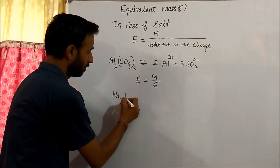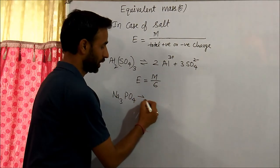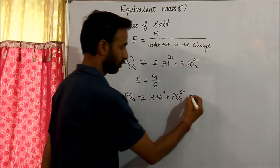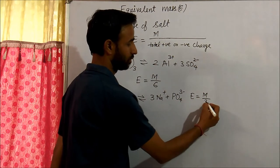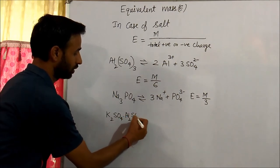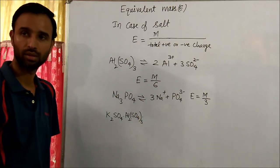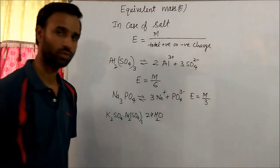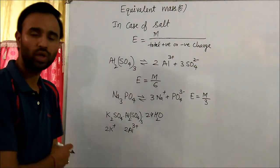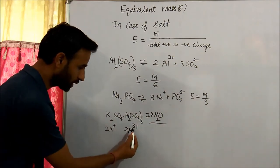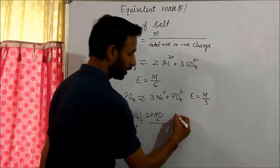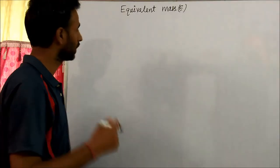For sodium phosphate (Na₃PO₄), it dissociates as 3Na⁺ and PO₄³⁻, so total charge is 3, and equivalent mass is M by 3. For the double salt K₂SO₄·Al₂(SO₄)₃·24H₂O (alum): total positive charge is 2K⁺ giving 2, plus 2Al³⁺ giving 6, totalling 8 positive. Water is neutral and not counted. So equivalent mass is M by 8.